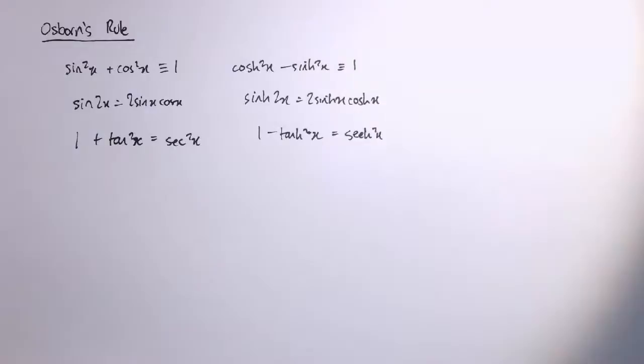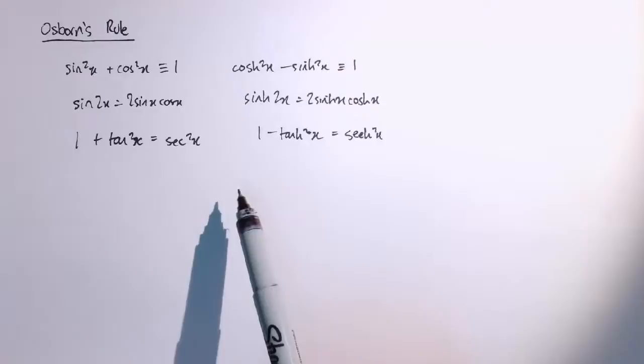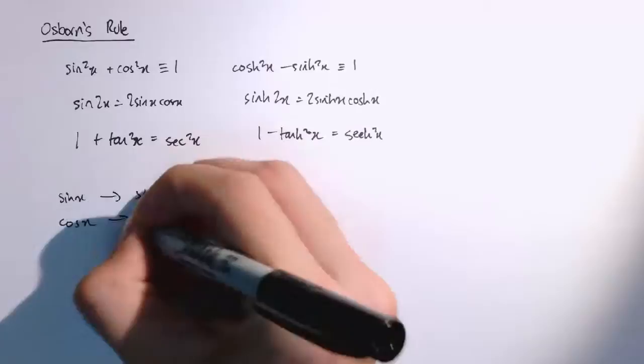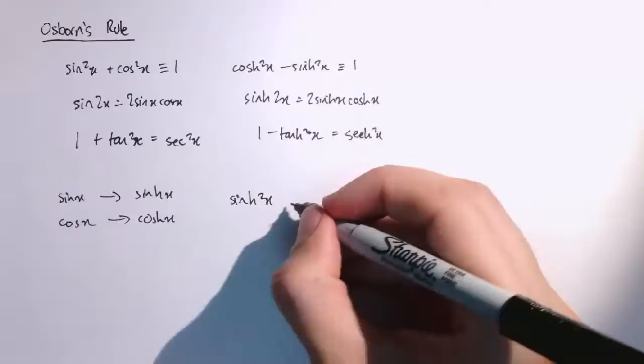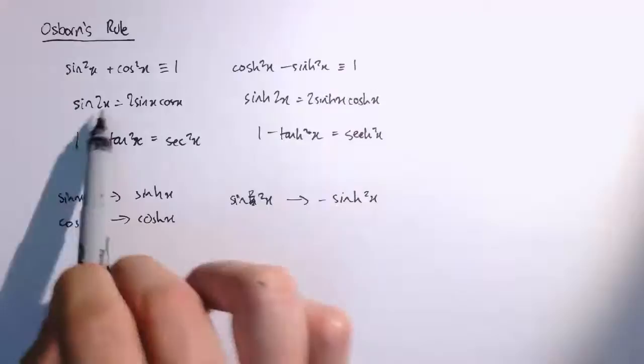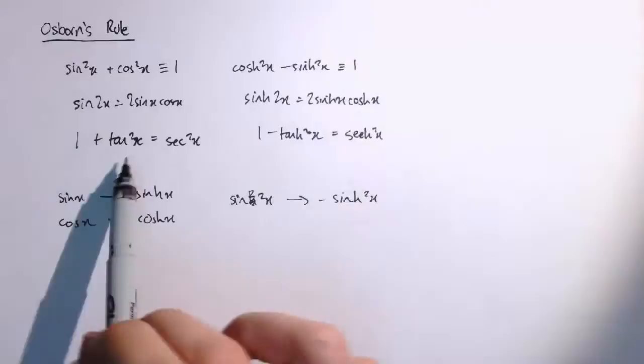What Osborne's rule tells you is how to decide whether you need to put a minus in place of a plus or vice versa. What it says is that if you've got a trigonometric identity, you replace sine x with sinh x and cos x with cosh x. But if anywhere there's a factor of sine squared, that's exactly when you need a minus sinh squared. So here it was sine squared, so that became minus sinh squared. Whereas in this one it was just 2 sine x cos x — no sine squared, so we didn't have to put a minus in.